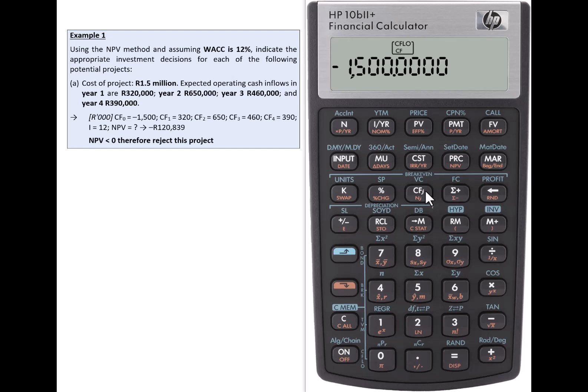Now we can continue with the operating cash flows. Cash flow 1 is 320,000 and we enter that into the same CFJ key. The next one is 650,000 entered into cash flow 2 position. After that, 460,000 at cash flow 3 and 390,000 for cash flow 4.